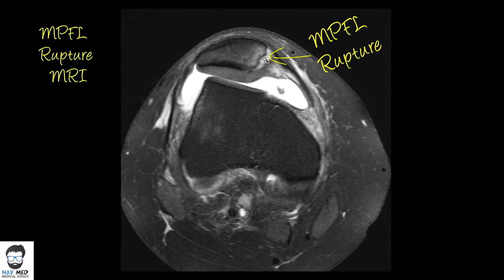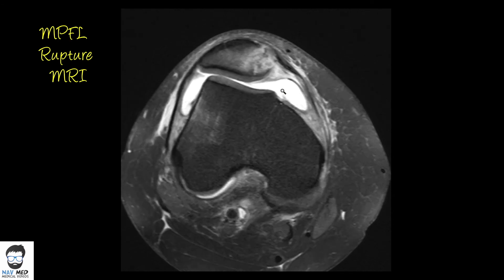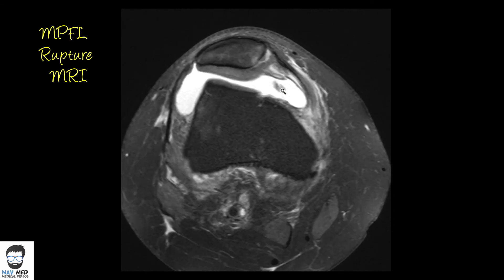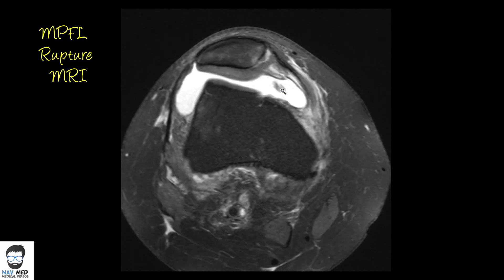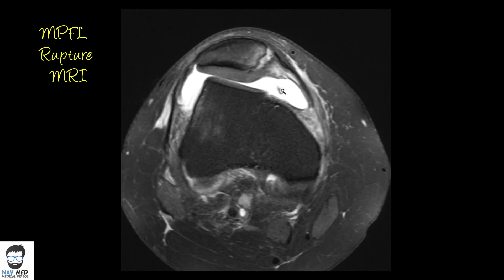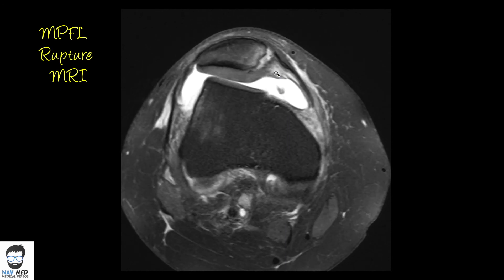If you go down further, you can also see a tiny loose body lying in the fluid. Scrolling down further, you can see a lot of medial patellar femoral ligament fibers are ruptured. Scrolling through again, you can clearly see that the medial patellar femoral ligament is ruptured from the patella.